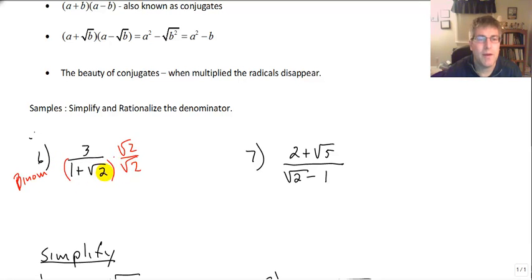If I multiply by radical 2 over radical 2, well, we think we might get rid of that, but what happens when we distribute, we end up with the square root of 2 plus 2. So we haven't eliminated our problem. We've just transferred it from one term to the other term. So we can't do that.